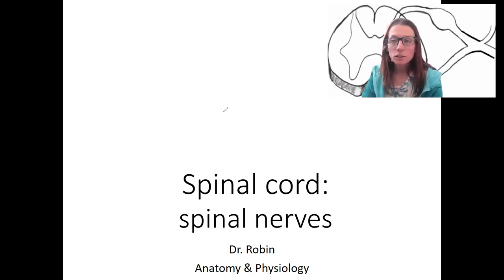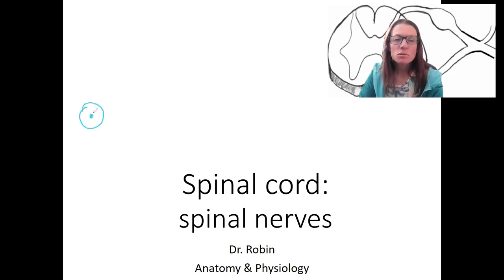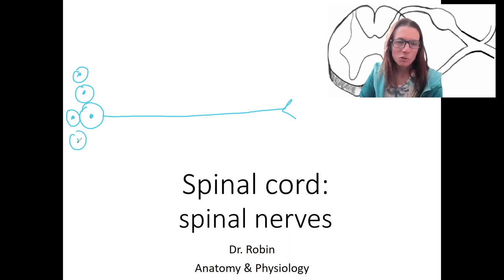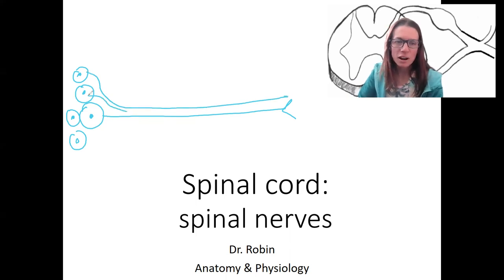Let's look at spinal nerves in more detail. We often draw a neuron and talk about the functioning of a single neuron, but you already know there's more than one neuron wherever we're talking about. This is a spinal cord, and those all have axons that travel together in bundles.